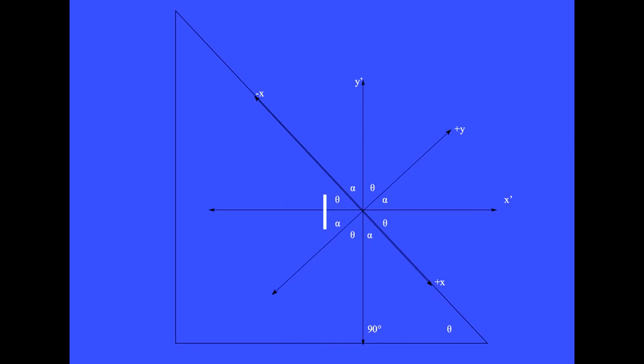Working clockwise around the entire figure, we see several right triangles and find that the two angles, alpha and theta, alternate around the figure. We will refer to this figure throughout the course.